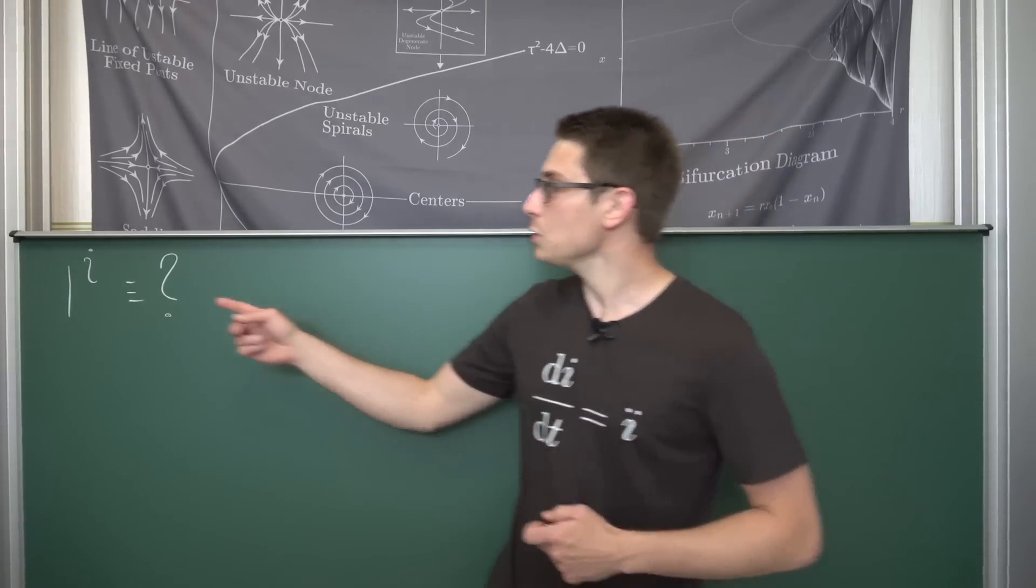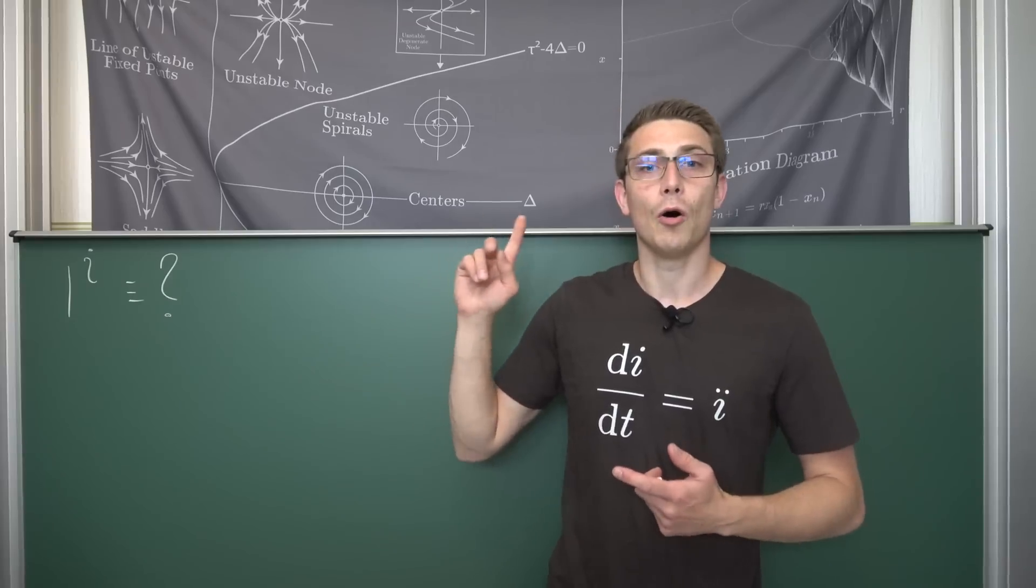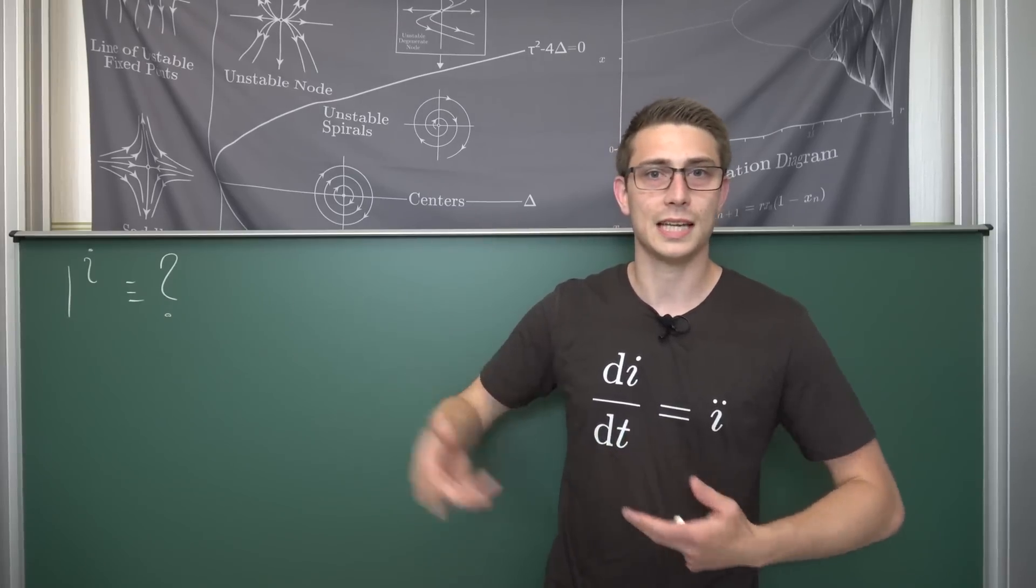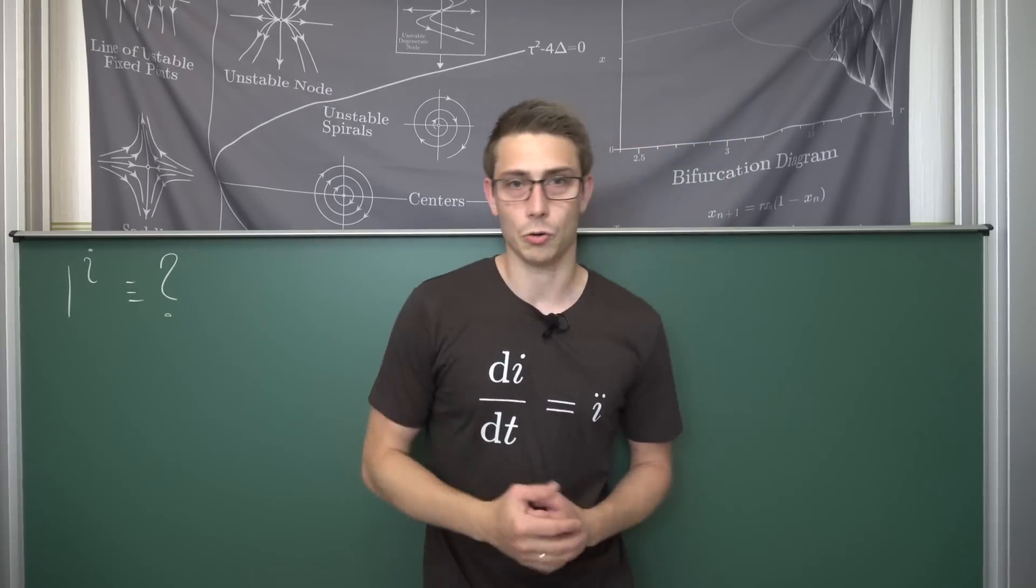And this is what we are going to talk about today. Namely, what happens if we don't deal with a complex number up here, for example i, on the principal branch. For example, on the second branch of the complex logarithm.